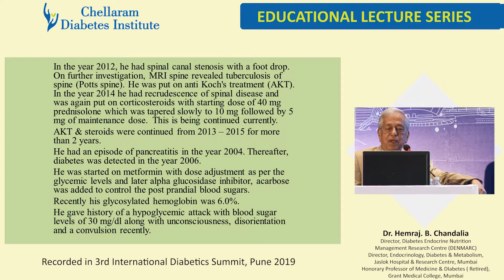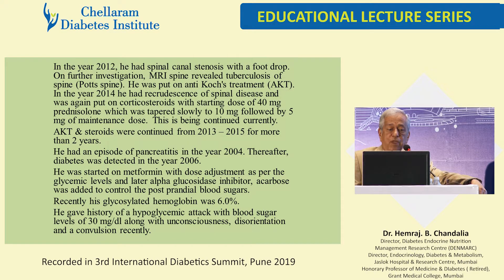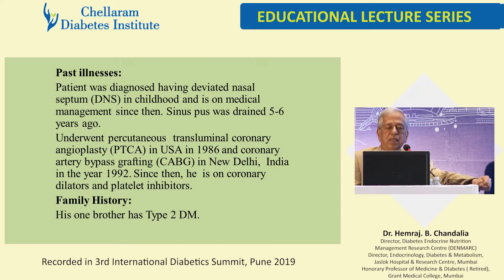In 2012 he had spinal canal stenosis with foot drop; MRI spine revealed tuberculosis of the spine and he was put on anti-Koch's treatment. In 2014 there was recrudescence of spinal disease and he was again put on corticosteroids, tapered slowly to 10 mg then 5 mg maintenance, continued with AKT and steroids from 2013 to 2015. He had pancreatitis in 2004, diabetes detected in 2006, started on metformin later with an alpha-glucosidase inhibitor. He had a history of PTCA in 1986 and CABG in 1992, and is on coronary dilators and platelet inhibitors.